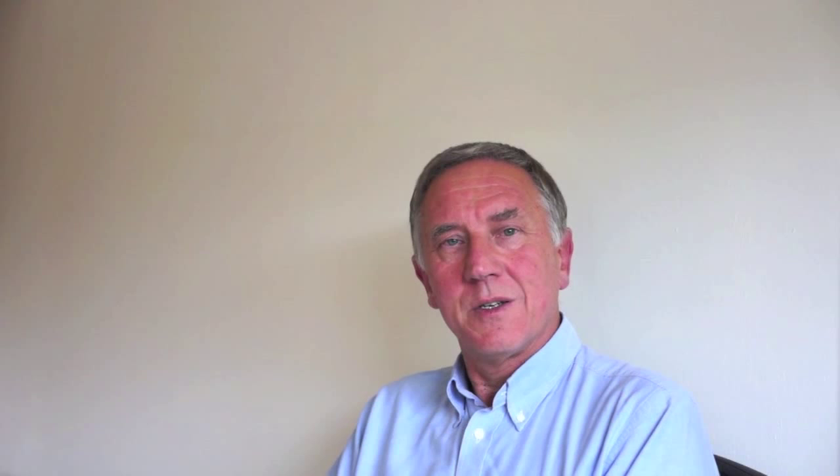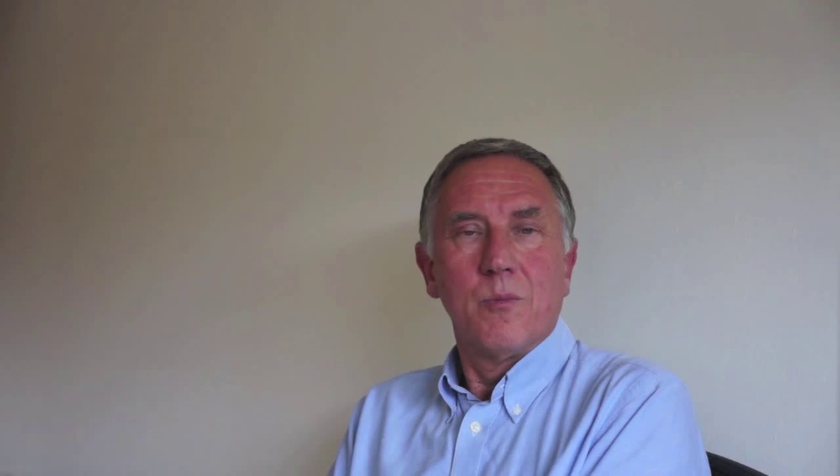Cyber security is mostly concerned with malicious damage to a system, but in fact it ought also to be concerned with accidental damage. People make mistakes. Keeping our information secure should not just be about attackers but also about protecting it from normal human mistakes. Many of the same techniques we use to protect against external attack can also help us detect and recover from accidents — from mistakes made by users and programmers in the system.